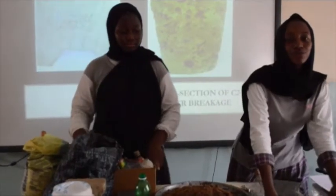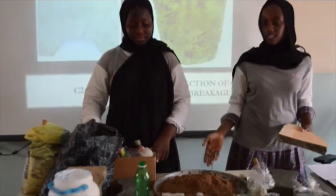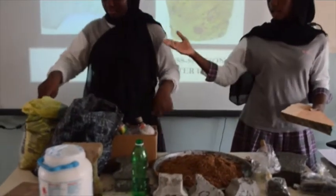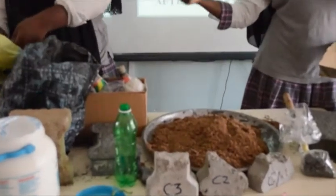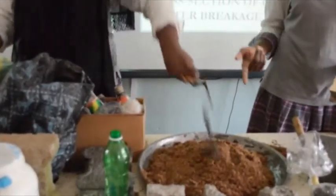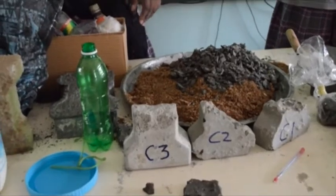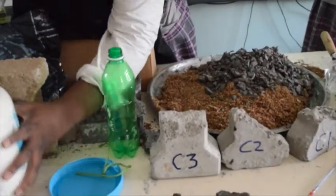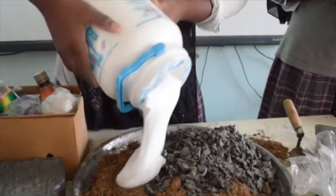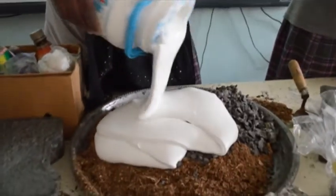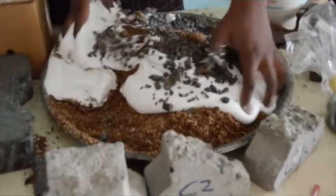We're now going into the production of the particle board. We have our 70% sawdust and we're going to add the 30% 5 to 15 mm nitlarium. We're now going to add the top bond. We're now mixing.